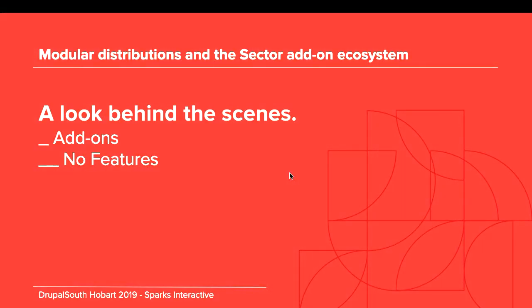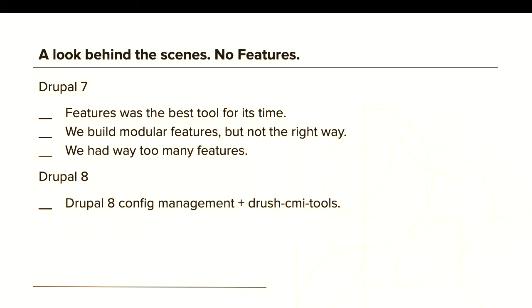No Features. Features was the best tool for its time — we bought into modular features but didn't do it in the right way. At certain points we split content types up into a content type feature, a permission feature, a content feature — we had everything. We had a great vision of the modular distribution, we just didn't quite pull it off. To be totally honest, a massive chunk of this was solved by the amazing work done by the Drupal 8 team and the configuration management system. Changes are easier, and things just work out of the box — even better when you combine Drush CMI tools.